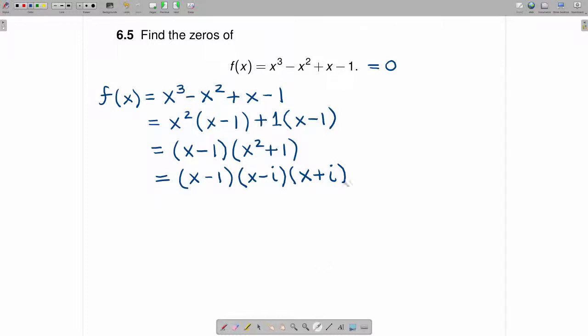Now if we're trying to find the values such that f(x) = 0, we can equate this to 0. And now you can see that what we have is one thing times another thing times another thing equal to 0. And because of that,